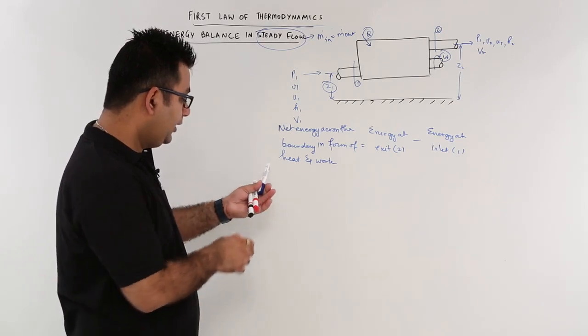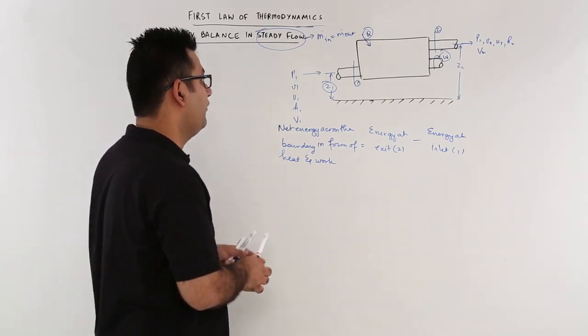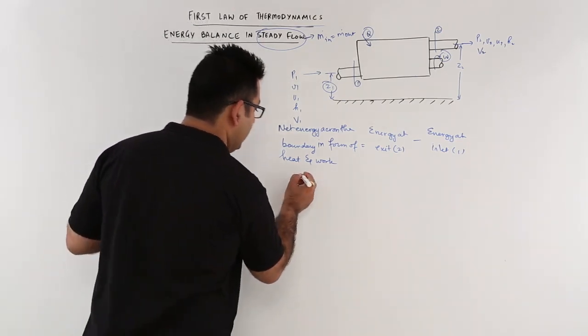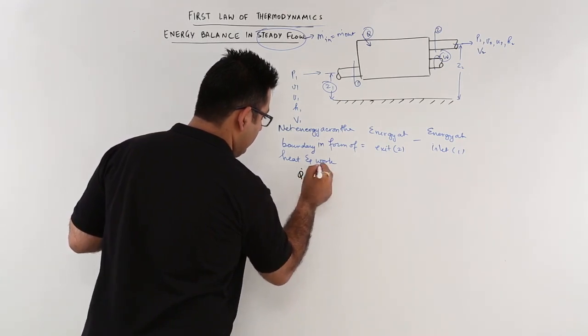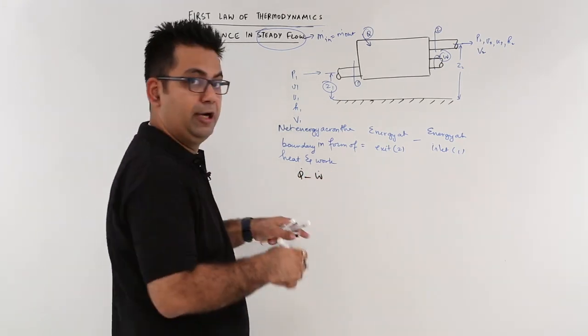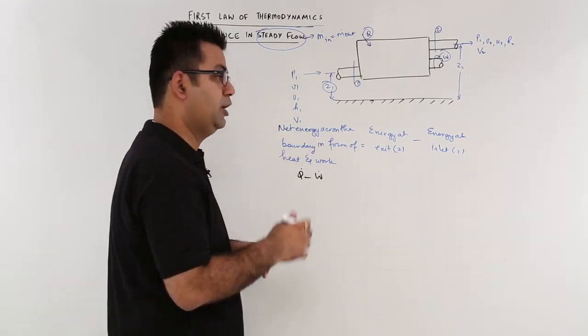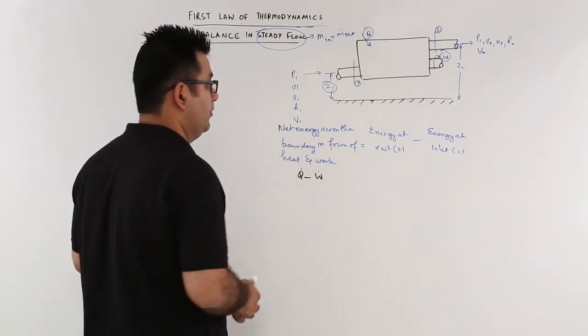The net energy across the boundary in the form of heat and work is Q dot minus W dot, that is the rate of heat and work, which is kilojoules per second or kilowatts.